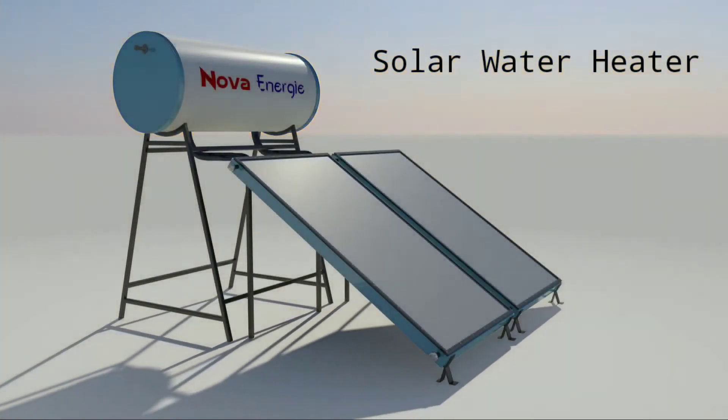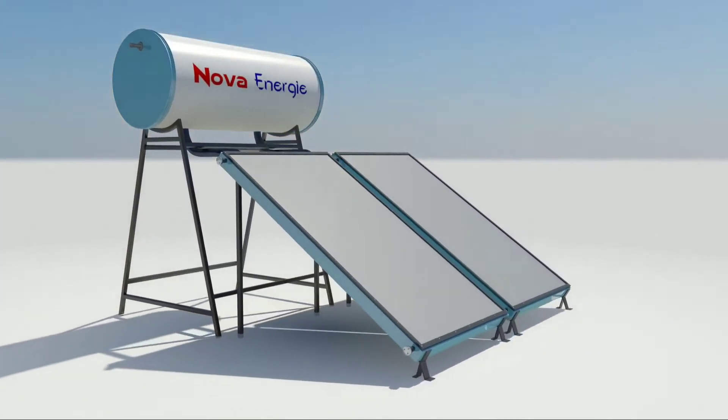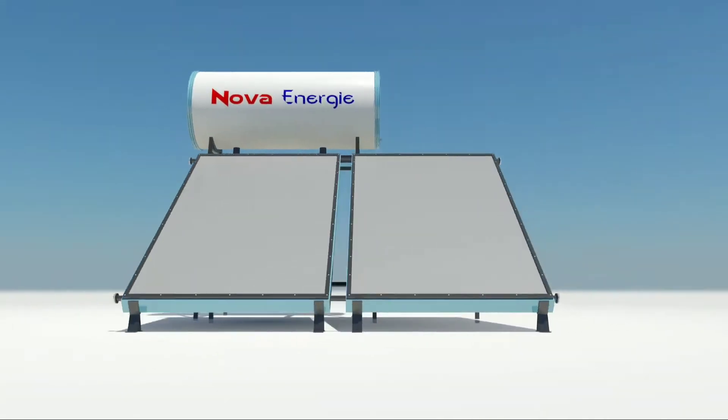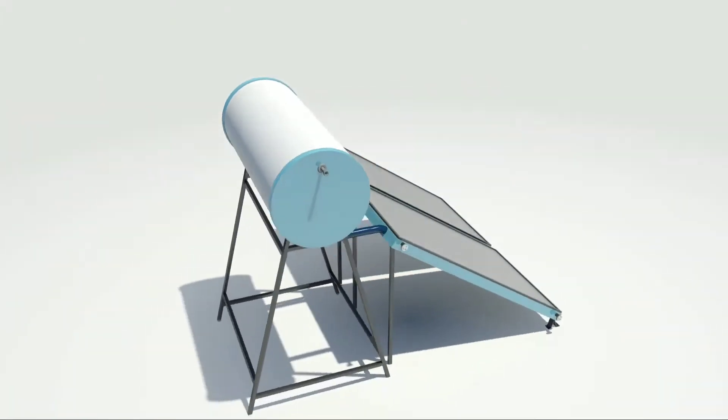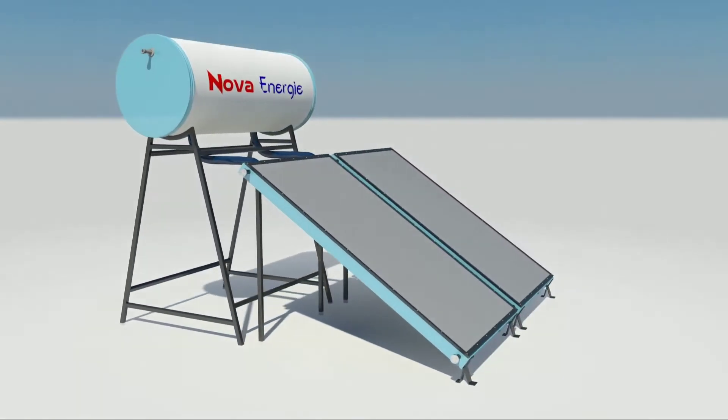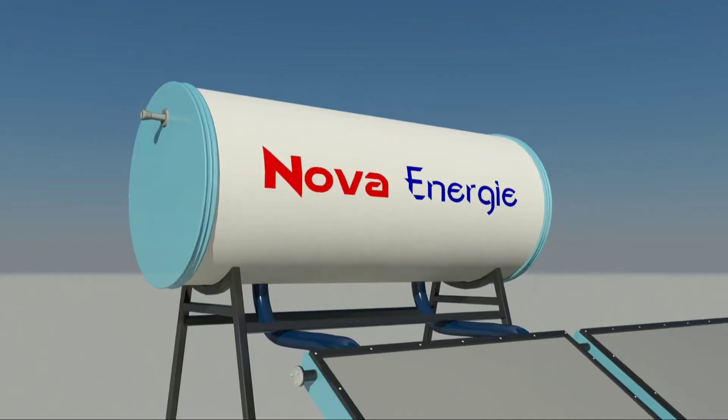A solar water heater is equipment used to convert the sun's electromagnetic energy into heat energy for heating water using a solar collector.